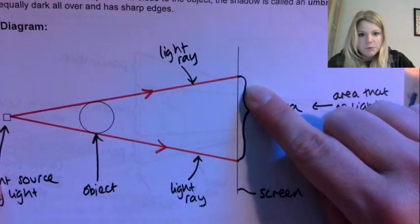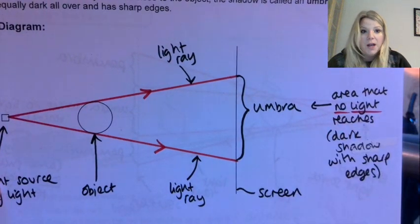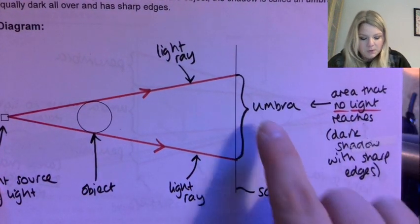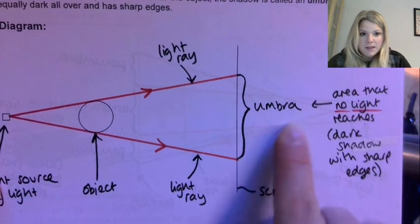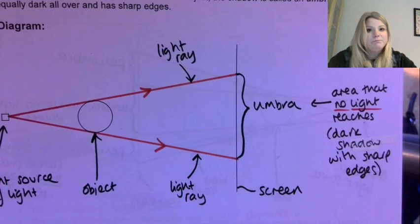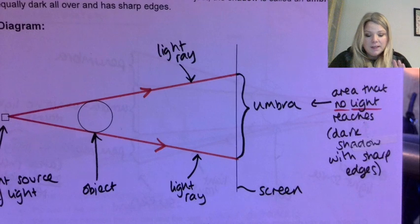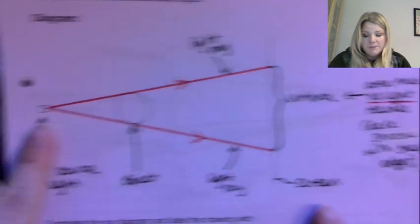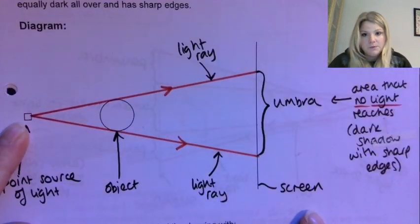The proper dark shadow where absolutely no light reaches, we call that an umbra, and it'll be proper dark, no light, and it'll have a sharp edge if we have this point source here.